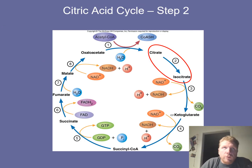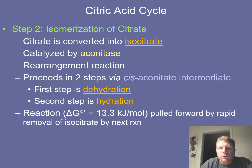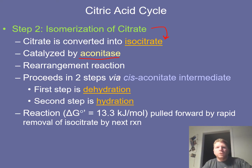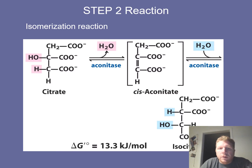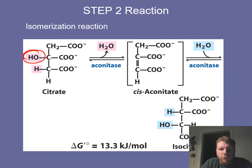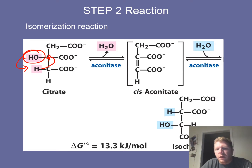Step number two: after we've generated our citrate, we are going to do an isomerization. This enzyme is known as aconitase, and it performs a rearrangement of citrate to isocitrate. The way this is done is first through a dehydration, then moving the OH group and a hydrogen to switch spots — removing water and then adding water — making cis-aconitate as an intermediate and producing isocitrate as the product.